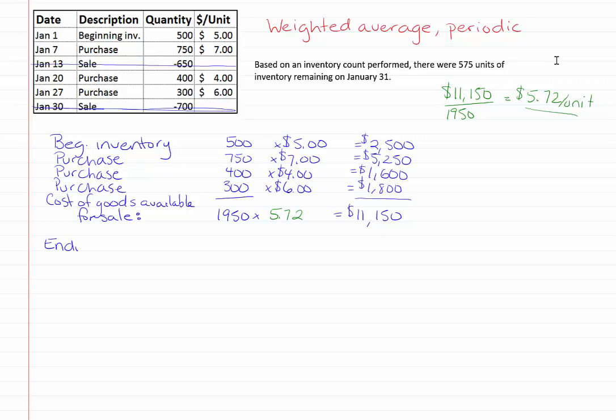And if you remember back to your calculation of cost of goods sold on the income statement, cost of goods available for sale minus our ending inventory will give us our cost of goods sold.